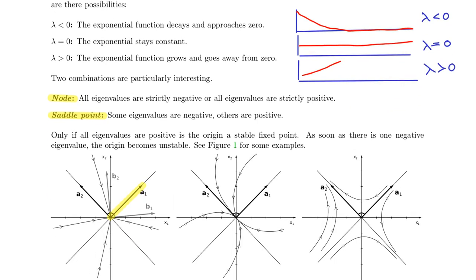So if that is the case, then only one exponential function plays a role and we have a strict exponential decay or growth in the direction of that eigenvector.